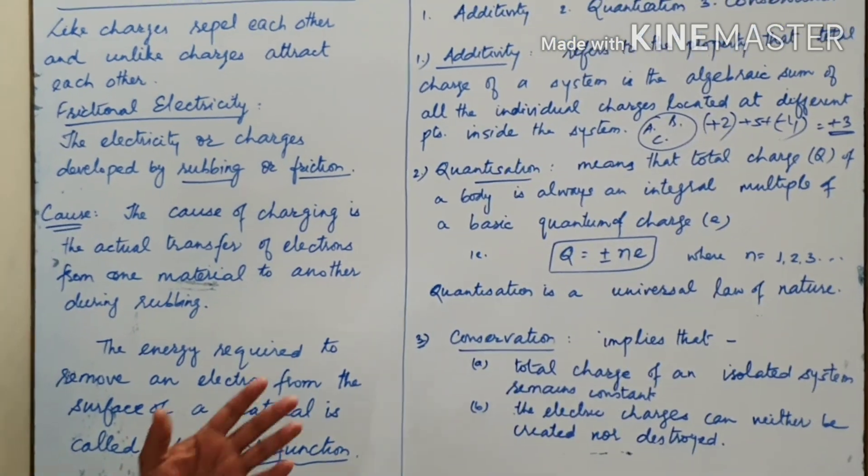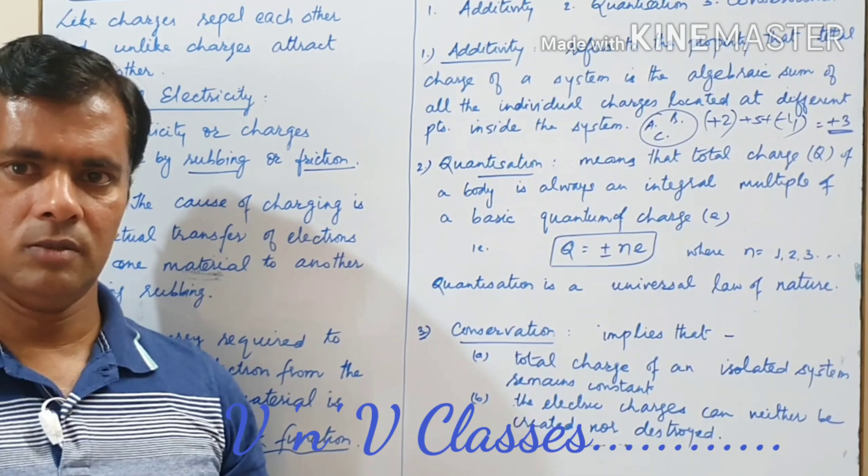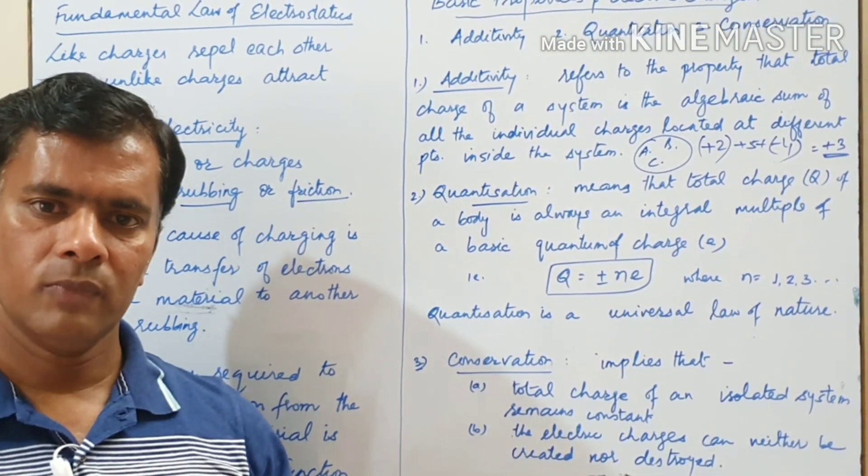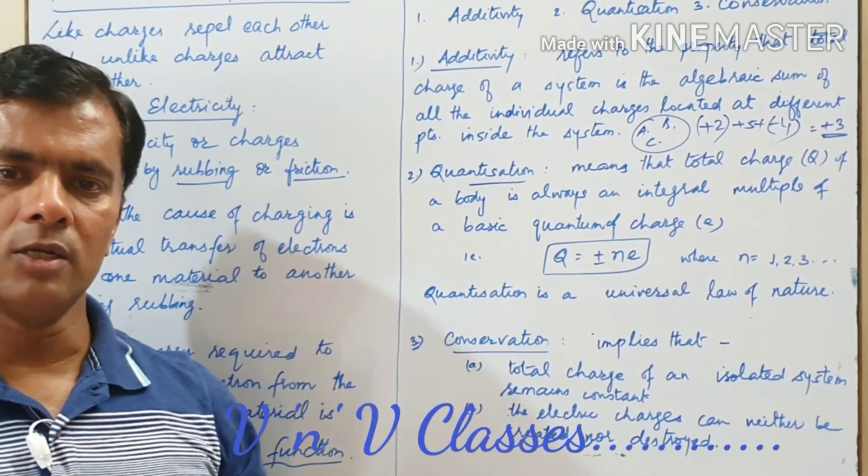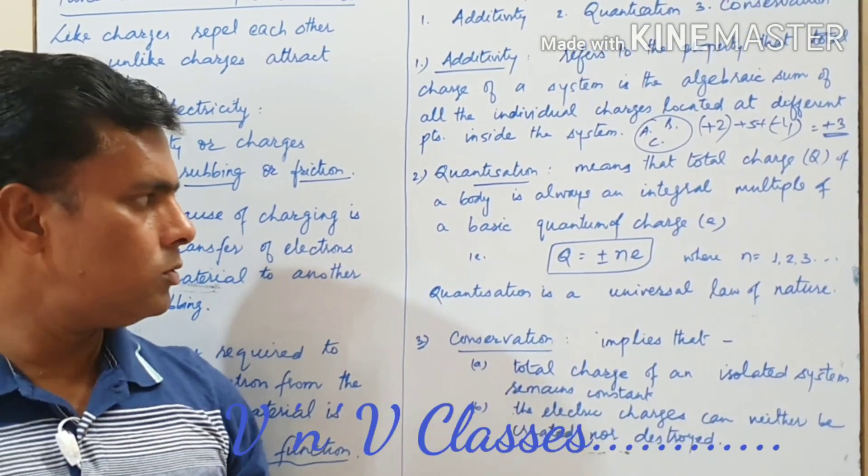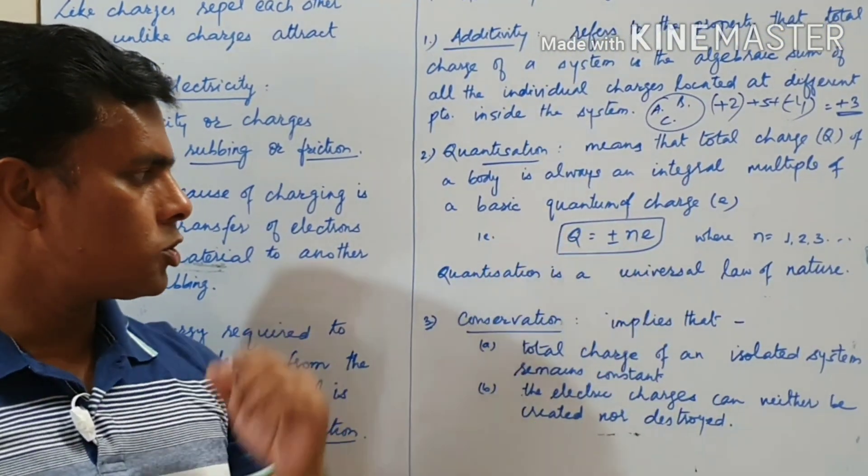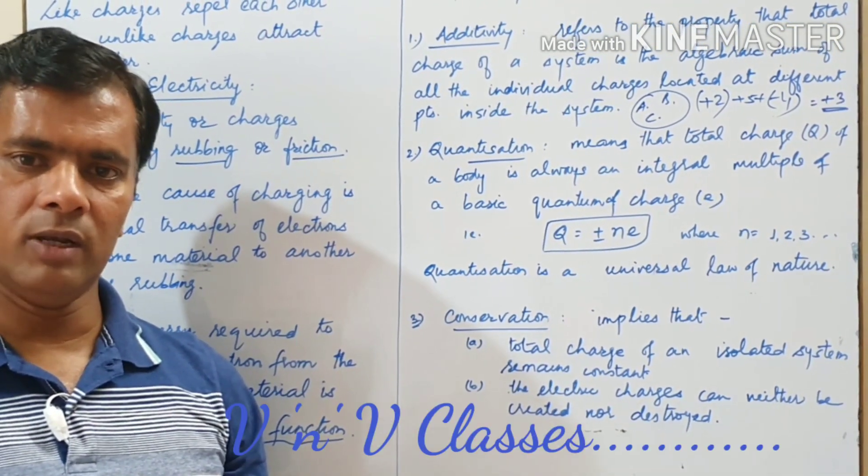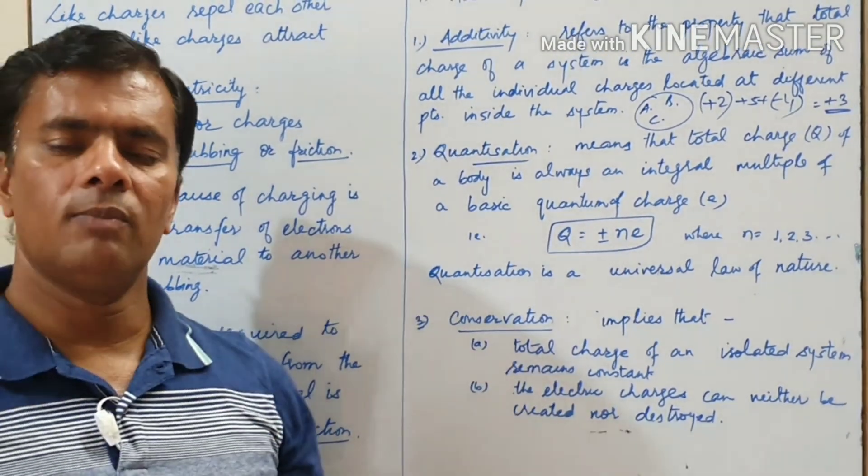The second property is very important that refers to the quantization of charges. Quantization means that charge on any body is always an integral multiple of a basic quantum of charge. Charge of the body if referred as Q capital, and the basic quantum is small e, then this Q equals to plus minus N into E where N is an integer, N 1, 2, 3, N integer.